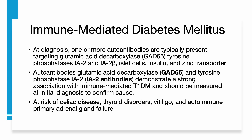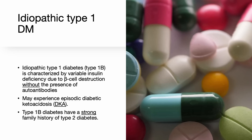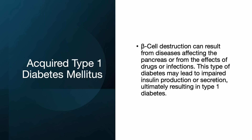Patients with type 1 diabetes are at increased risk of other autoimmune disorders, including celiac disease, thyroid disease, vitiligo, and autoimmune primary adrenal gland failure. Idiopathic type 1 diabetes or type 1b is characterized by variable insulin deficiency due to beta cell destruction without the presence of autoantibodies. Patients with type 1b diabetes may experience episodic diabetic ketoacidosis and typically have a strong family history of type 2 diabetes. Acquired type 1 diabetes involves beta cell destruction from diseases affecting the pancreas or from the effects of drugs or infections, potentially leading to impaired insulin production or secretion.